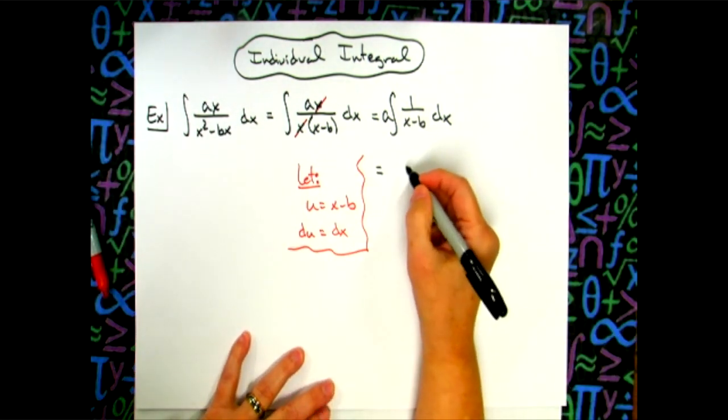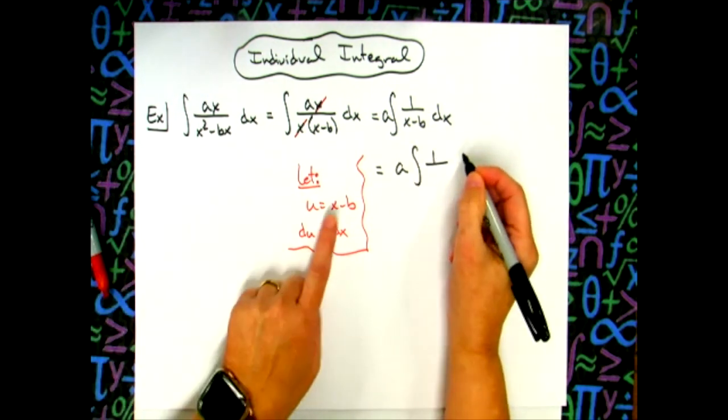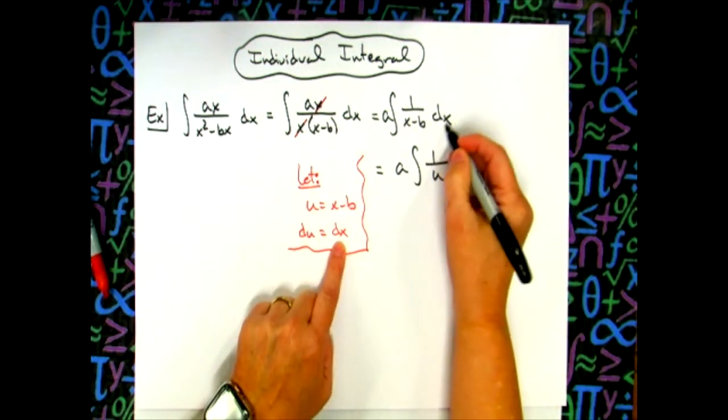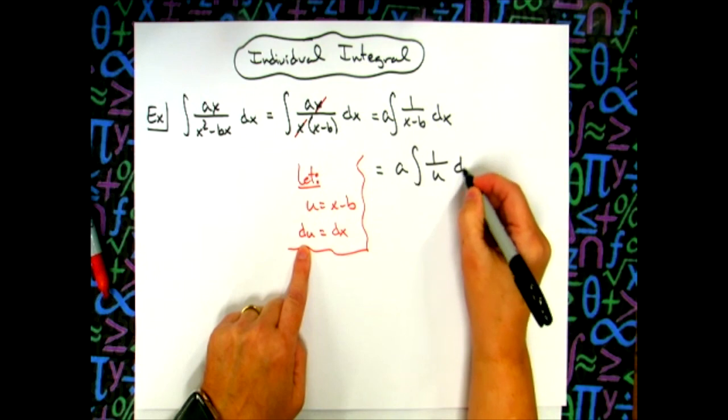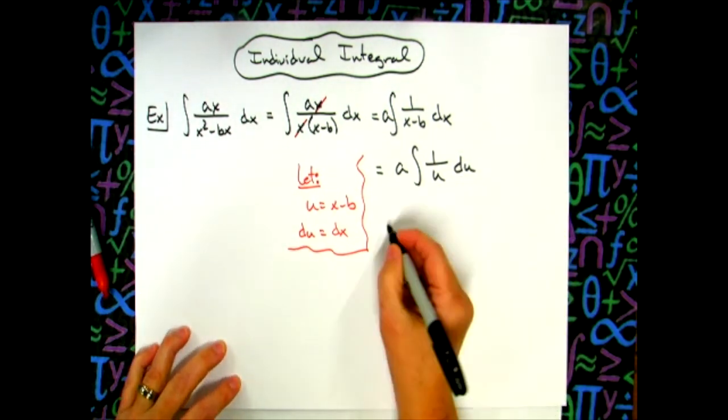I'm going to come back up here to the original problem and start doing some substitutions. The a is already out in front. I'm going to replace the x minus b with u and replace the dx with du. I am now in terms of u, so I can integrate.